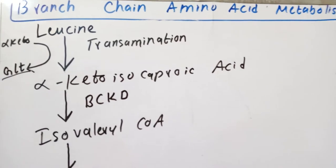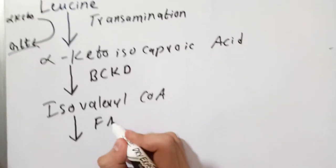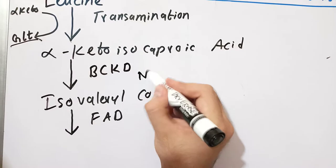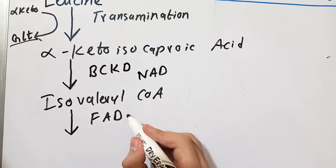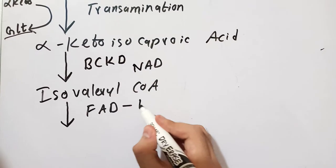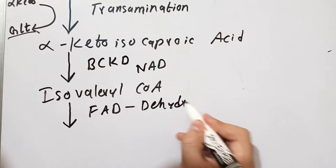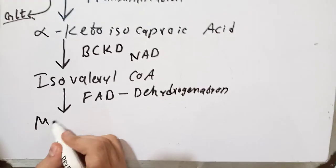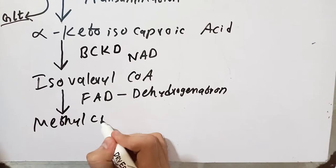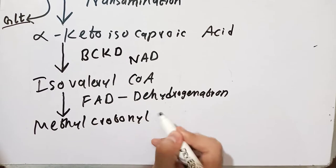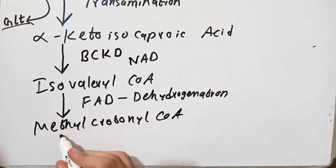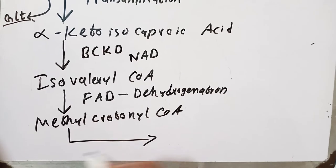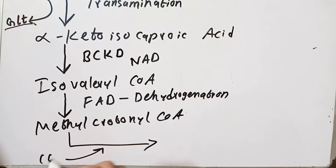Isovaleryl-CoA will undergo FAD-mediated dehydrogenation. The FAD-mediated dehydrogenation will lead to the formation of methyl-crotonyl-CoA. The metabolism of methyl-crotonyl-CoA continues with the addition of carbon dioxide into the compound.